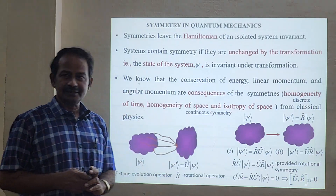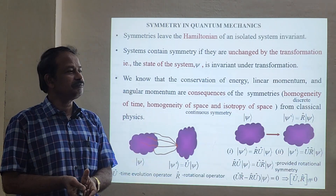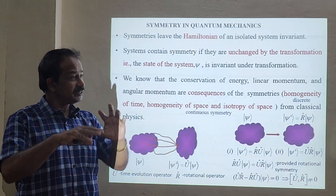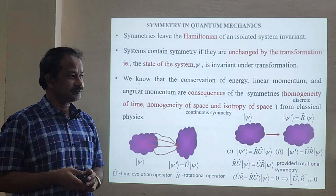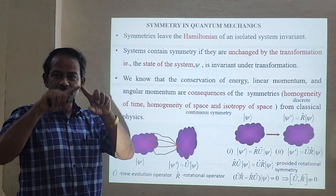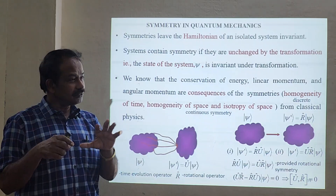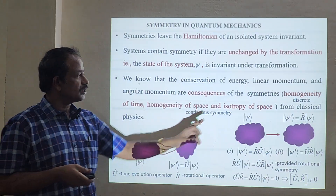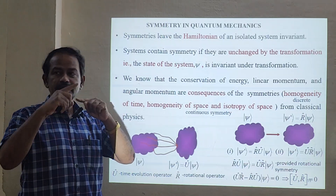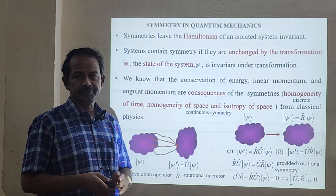Then there is isotropy of space. For example, take the electric field around the earth. If the earth is a perfect sphere, the electric field will be uniform in all directions — wherever you measure, the electric field is constant. This is called isotropy of space: the property will be equal in all directions.